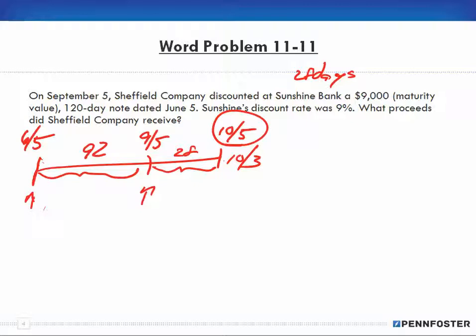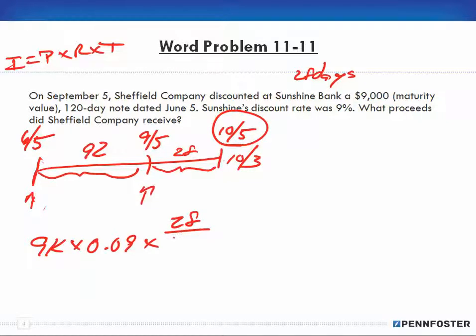So between there and there, that was 92 days. Between here and here, and that means that there's 28 days during this period, the discount period. So our discount period is 28 days.